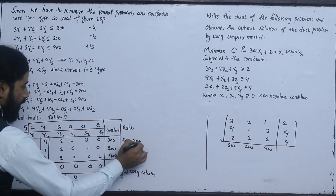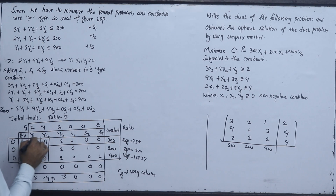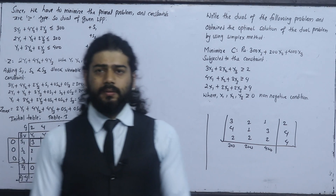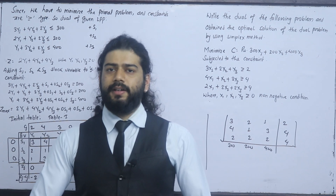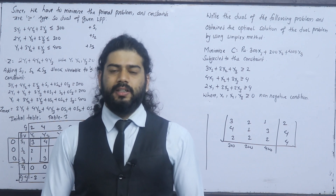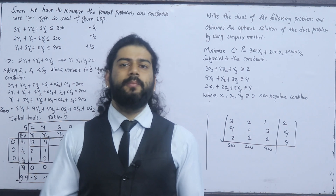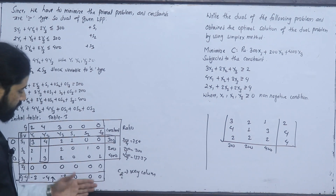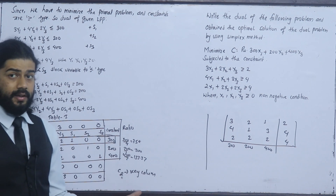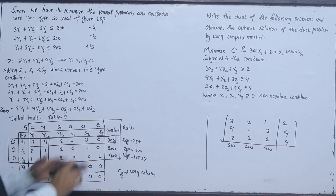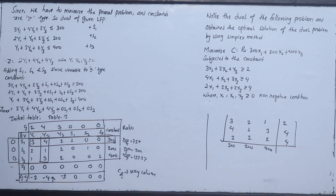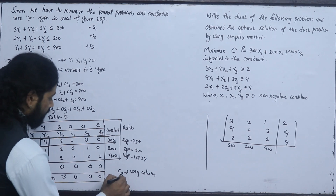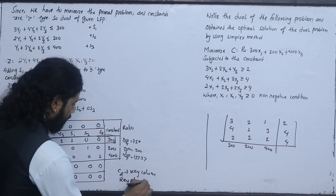Now we identify the key element. The key element is 4. This is the same procedure as before — part 1 of the simplex method. The basic question is solved in part 1. We convert to standard form, then isolate and apply the minimum ratio test. Key element is 4.